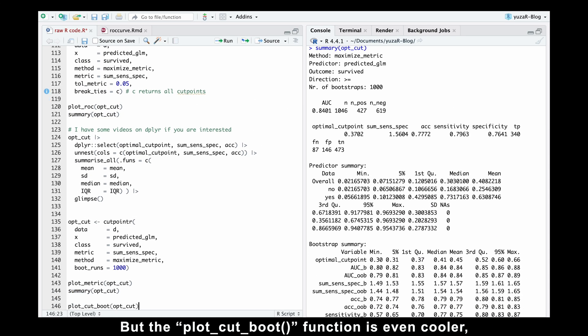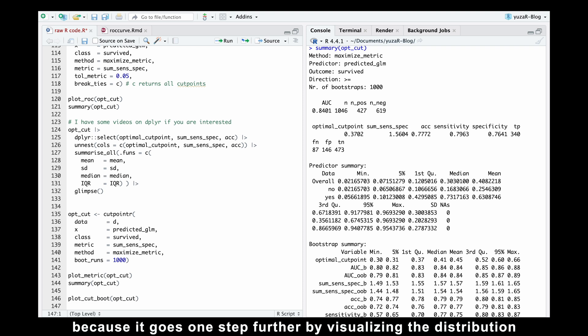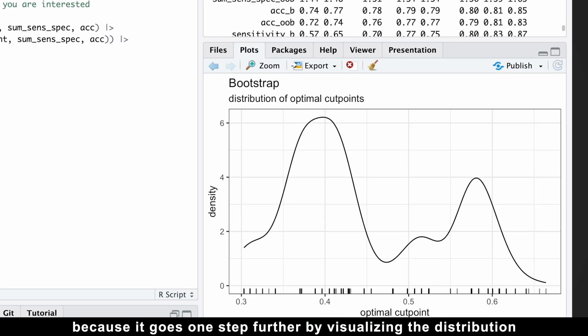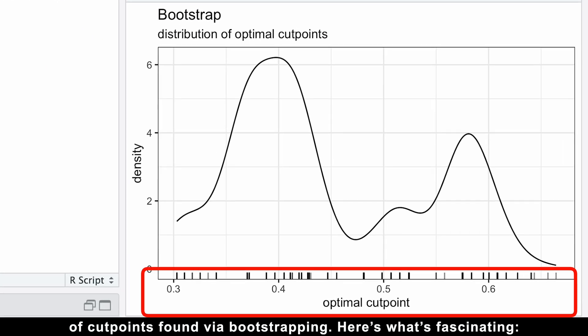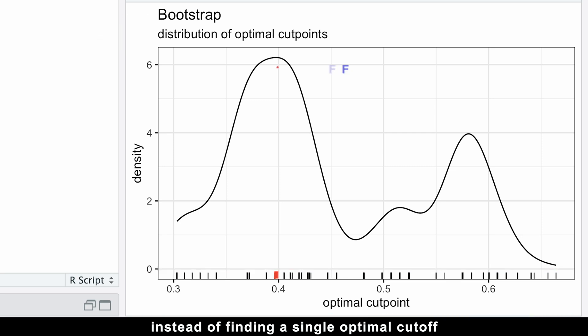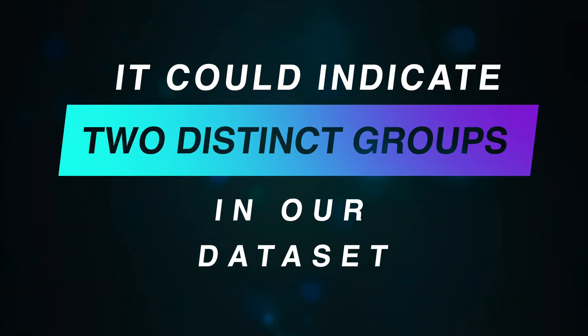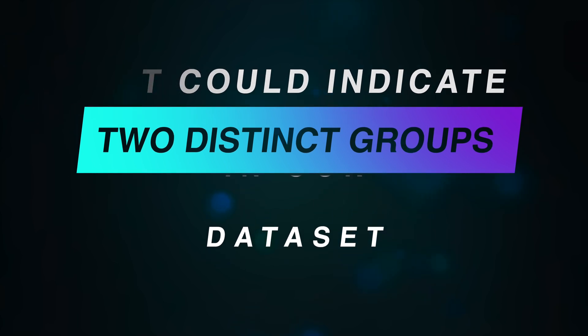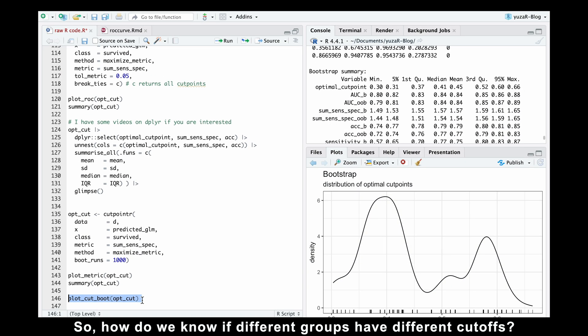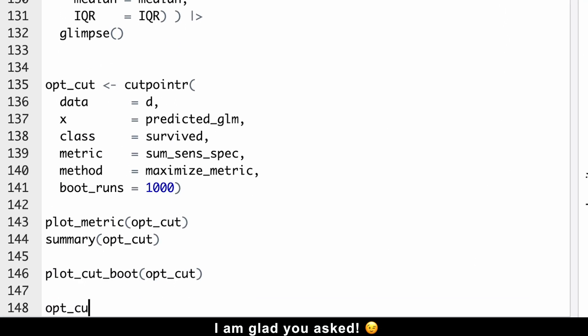But the plot cutboot function is even cooler because it goes one step further by visualizing the distribution of cutpoints found via bootstrapping. Here's what's fascinating. Instead of finding a single optimal cutoff or even a central range of viable cutoffs, bootstrapping reveals two peaks or two potential central cutpoints. What does this mean? It could indicate two distinct groups in our dataset. So how do we know if different groups have different cutoffs? I'm glad you asked.